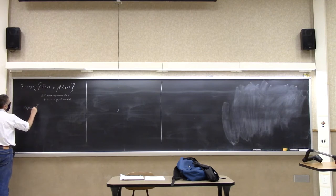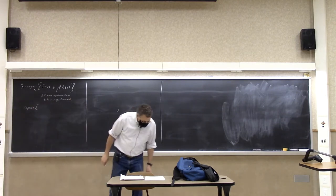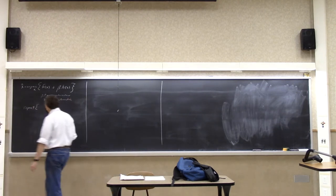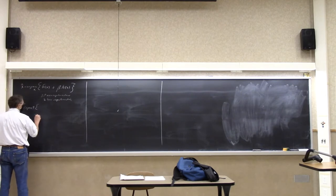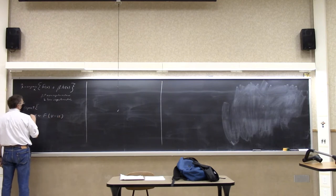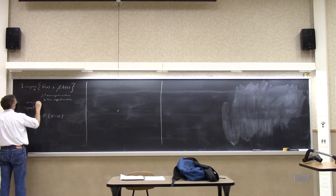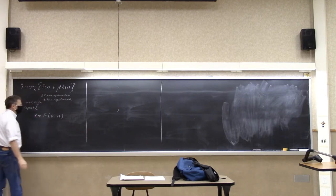This is going to be like the ADMM algorithm. And we have x and v. x goes to f of v minus u. And u starts initialized at 0, and v initializes at whatever — some guess that you think is pretty reasonable for your problem.